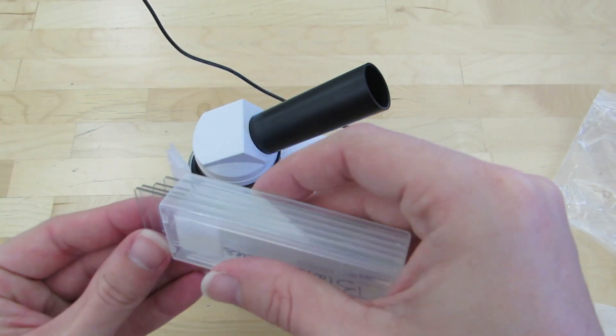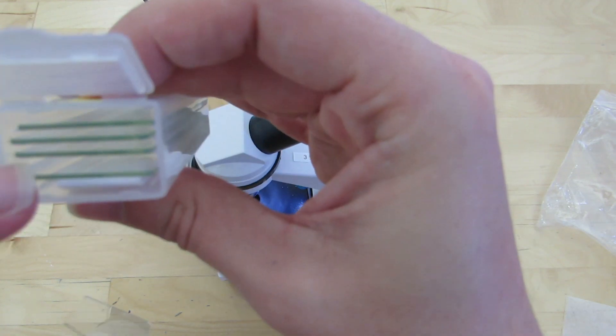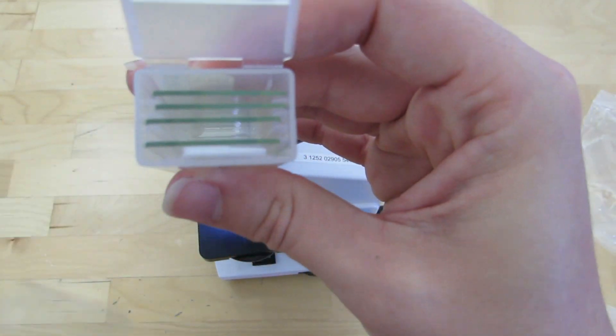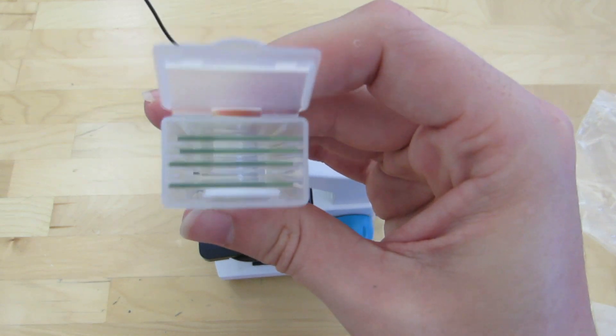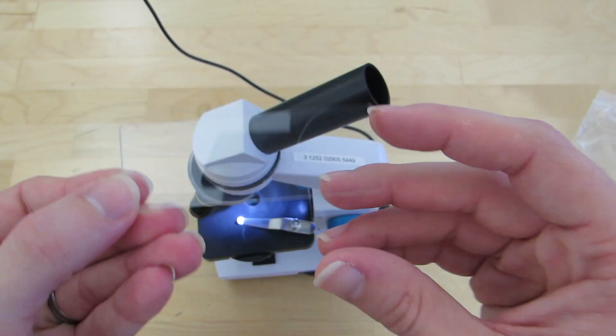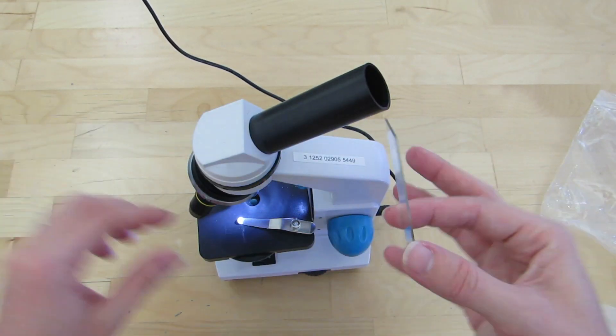These are blank slides. So they're not prepared. They don't have anything on it. They're blank. They're for you to use to create your own slides. They slide in and out of this little plastic box. There are little partitions to make it easy for you to slide in and out.